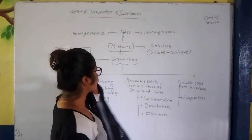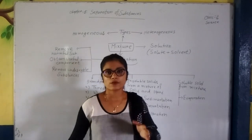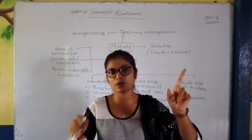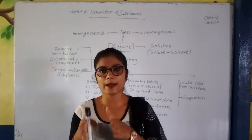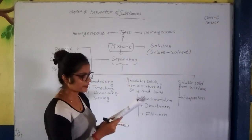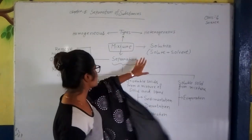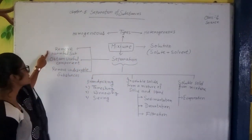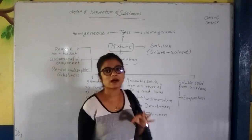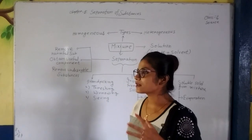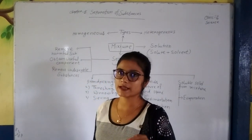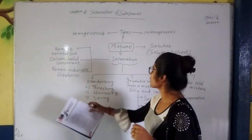What is the meaning of separation? Separation means from a mixture we have to separate the different components of the product — what is pure and what is the other substance. So we have to differentiate them. The reasons for separation are: to remove harmful substances, to obtain useful components, and to remove undesirable substances.